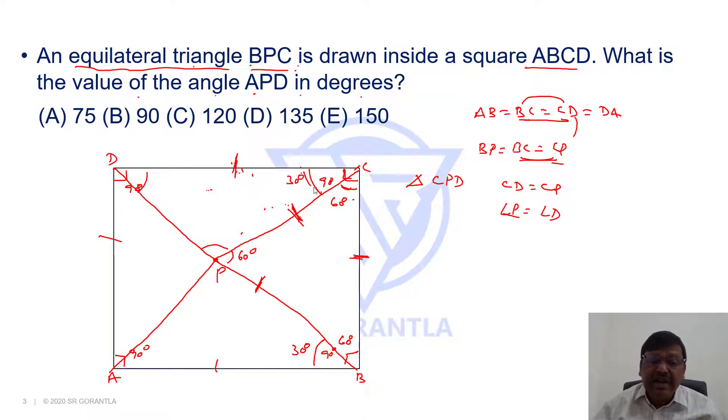But since this is 30 degrees, these two together should be 150. But they are equal means each one is 75. Total is 180. This is 30 means these two together is 150, but they are equal. So each one is 75.